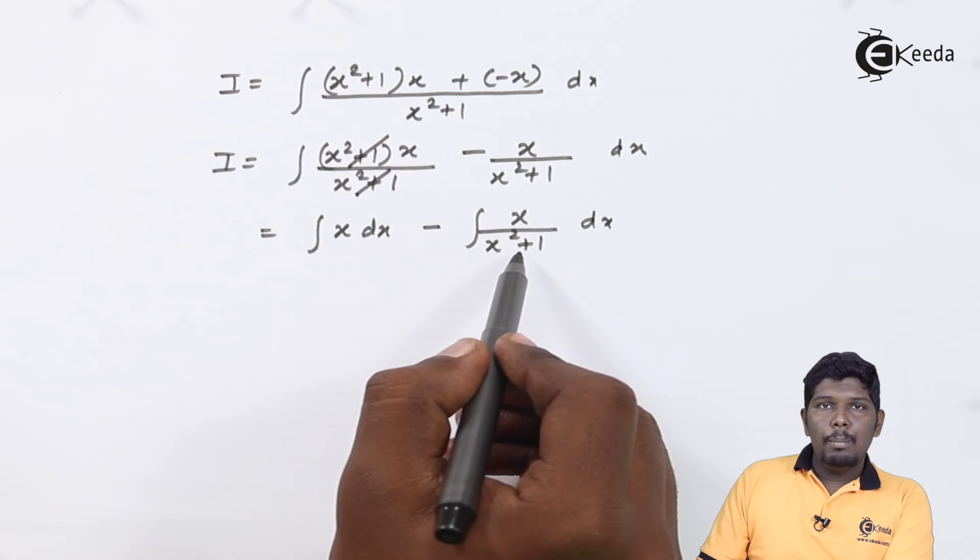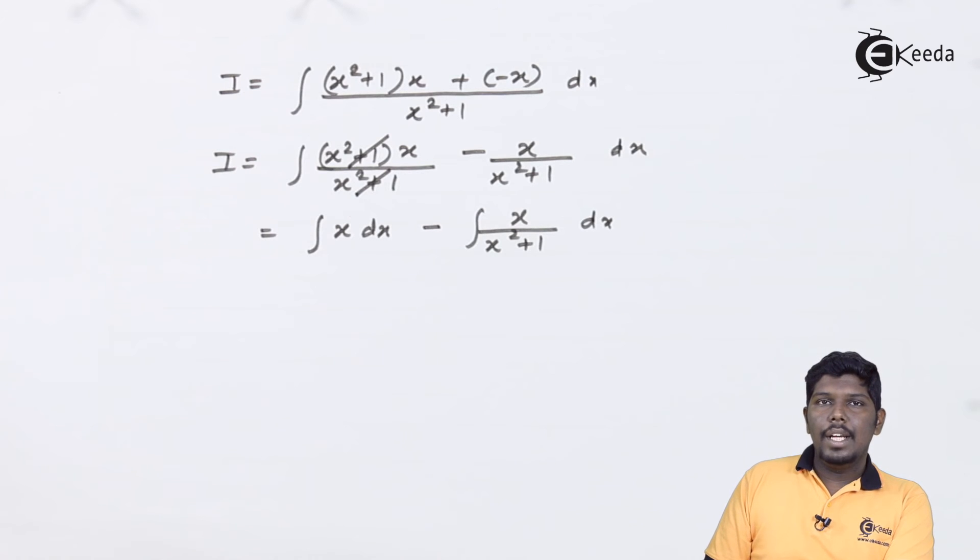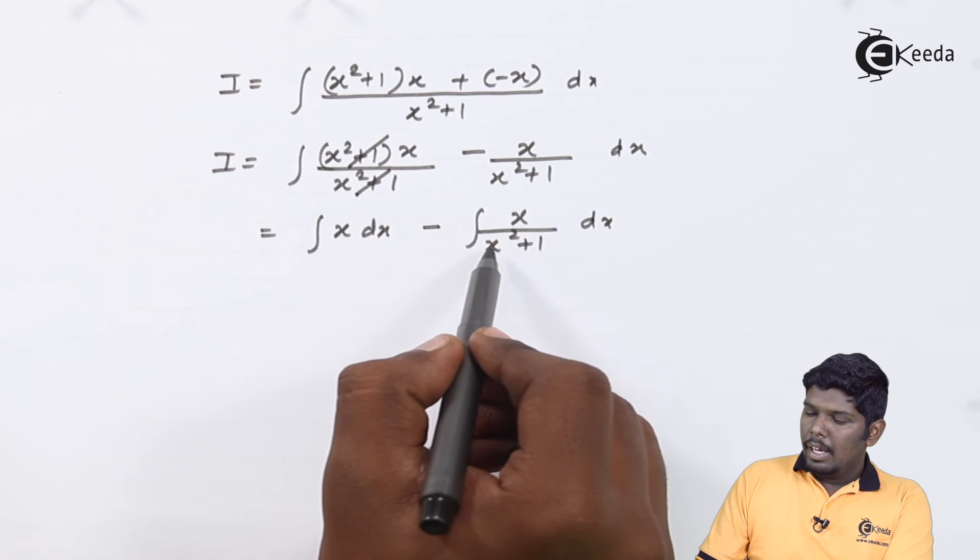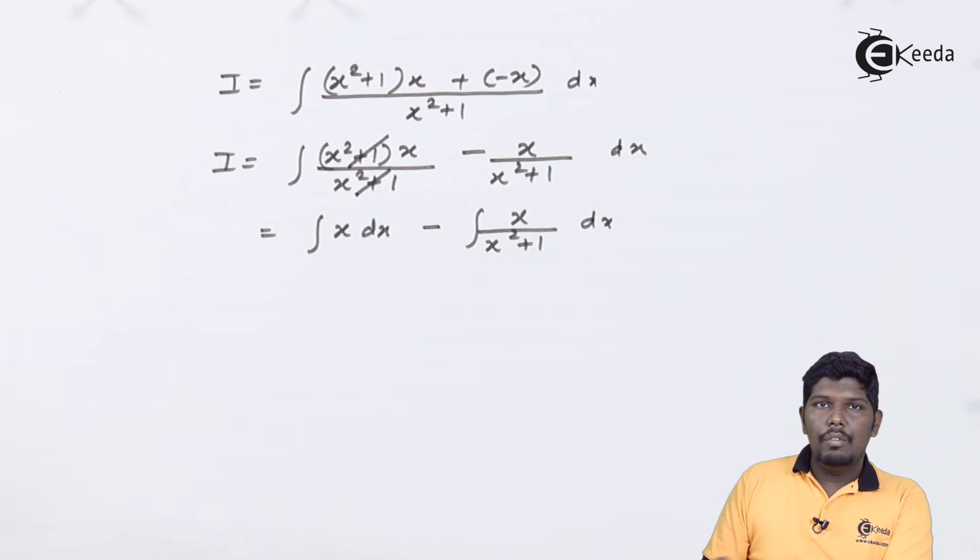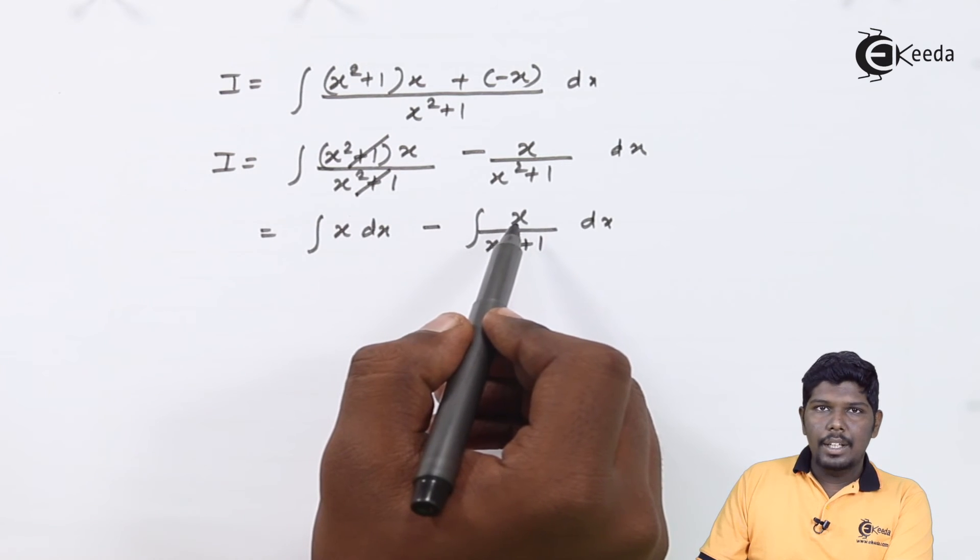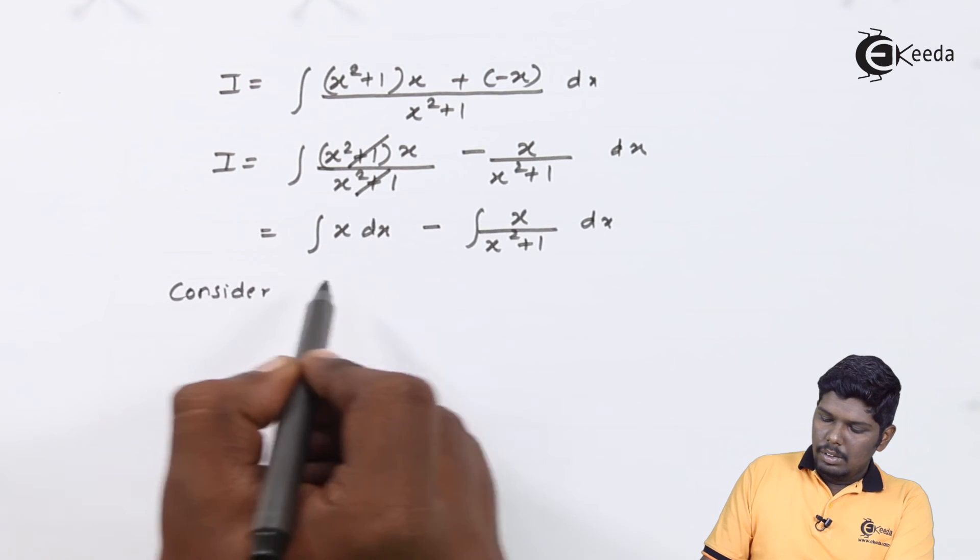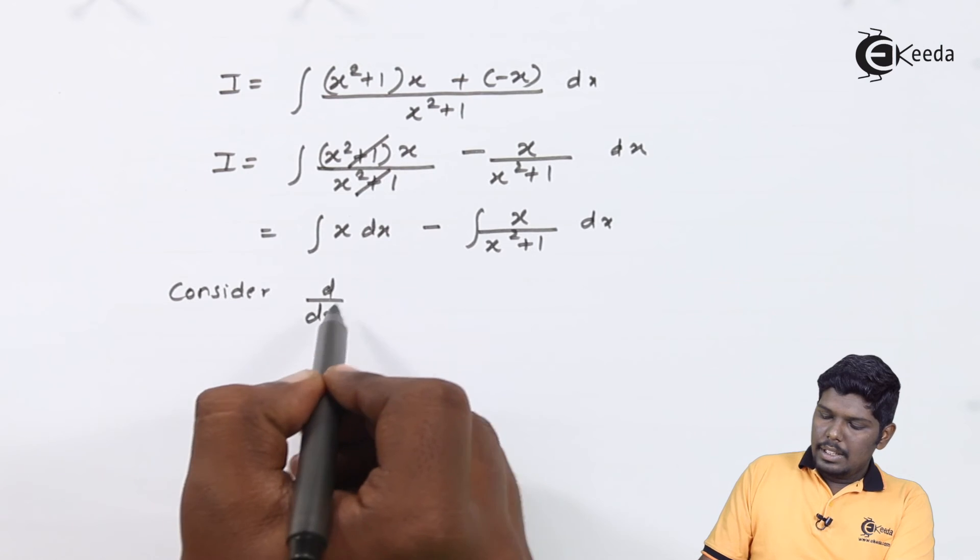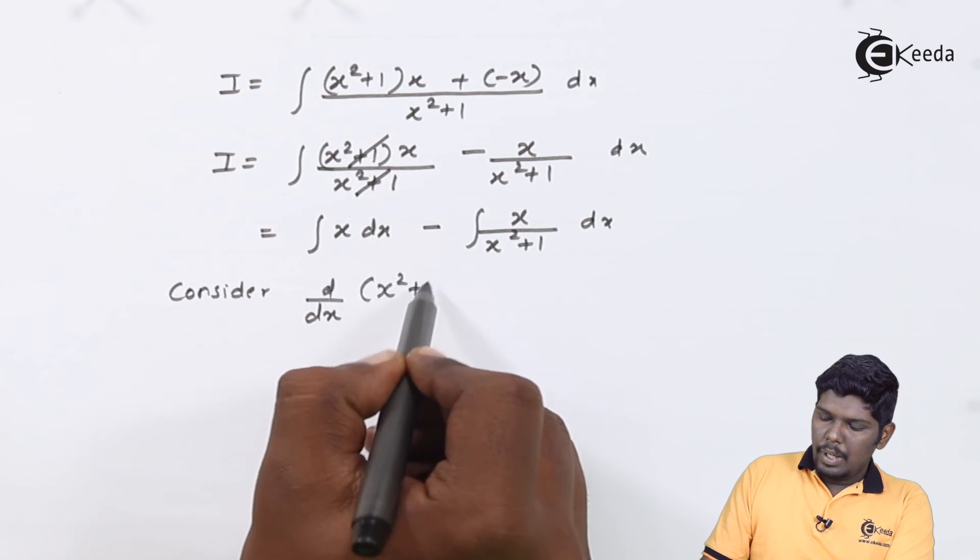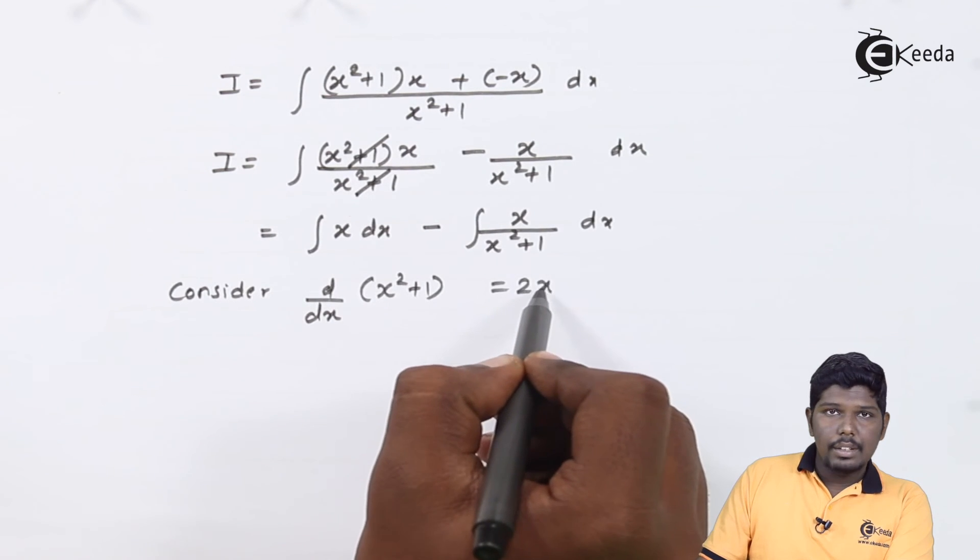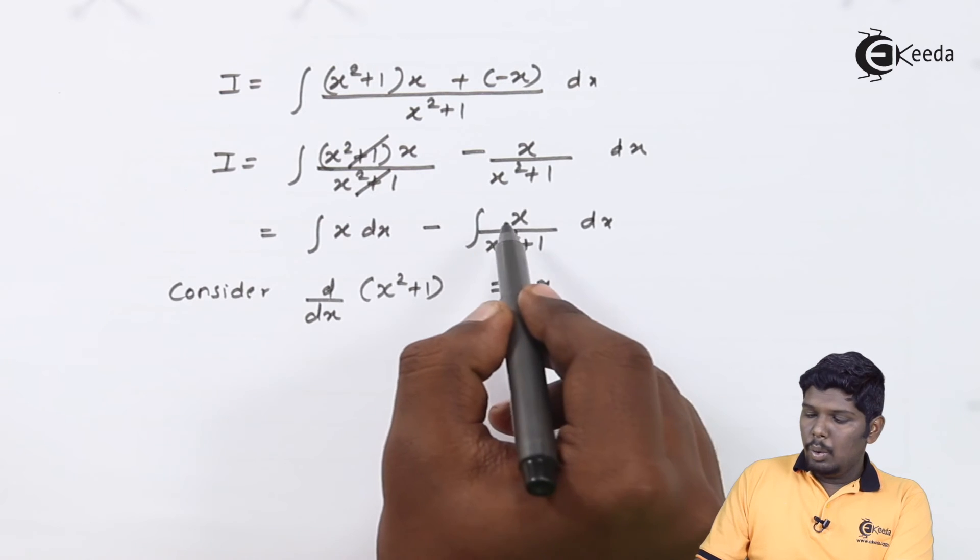Here you can use that important property of integral f'(x)/f(x) is log f(x) plus c. Meaning, derivative of x²+1 will be 2x and you have already x present in the numerator. Considering d/dx of x²+1 that will give you 2x. Here we only need to adjust 2.